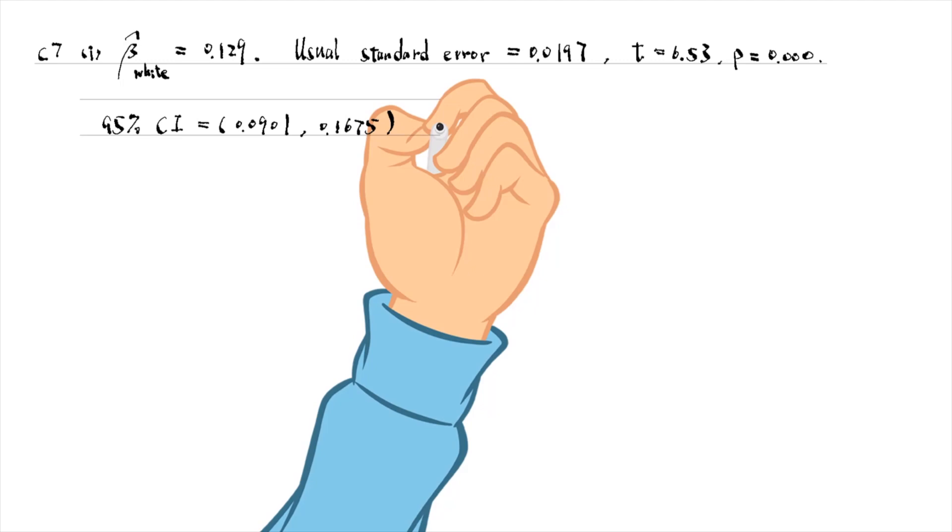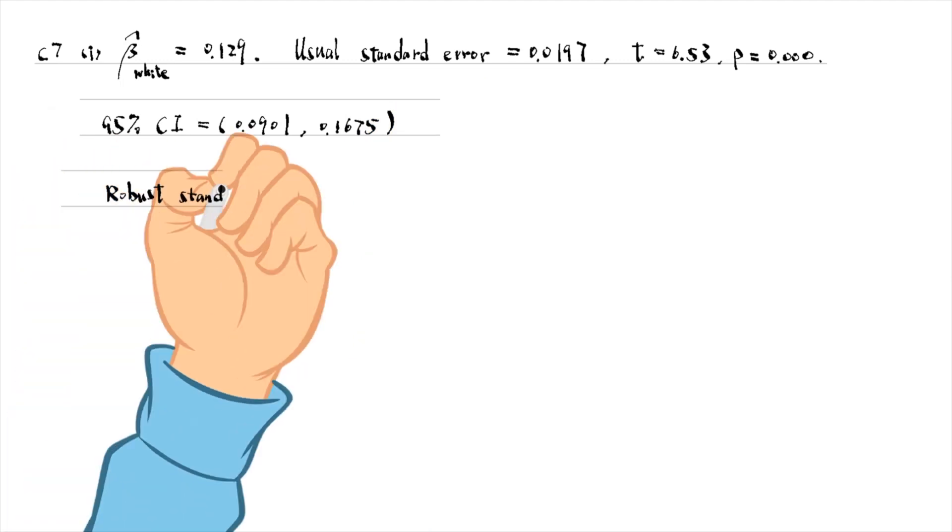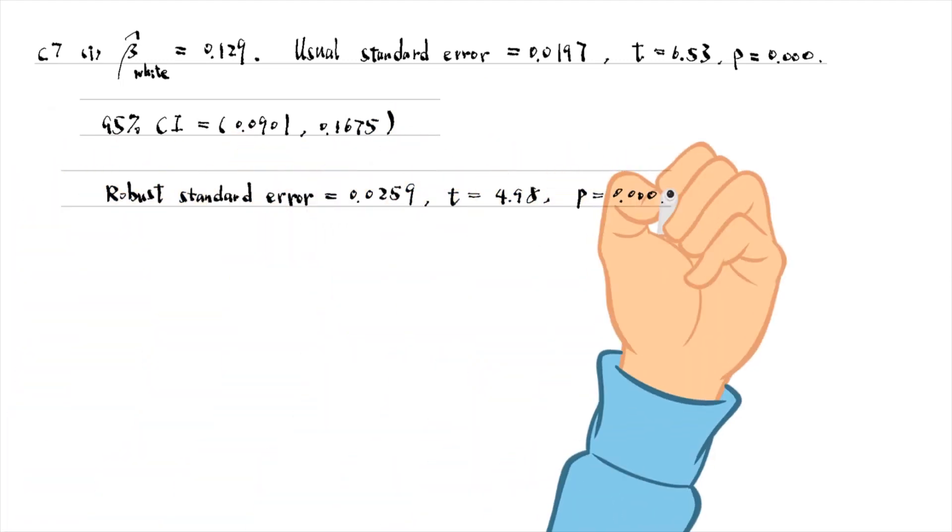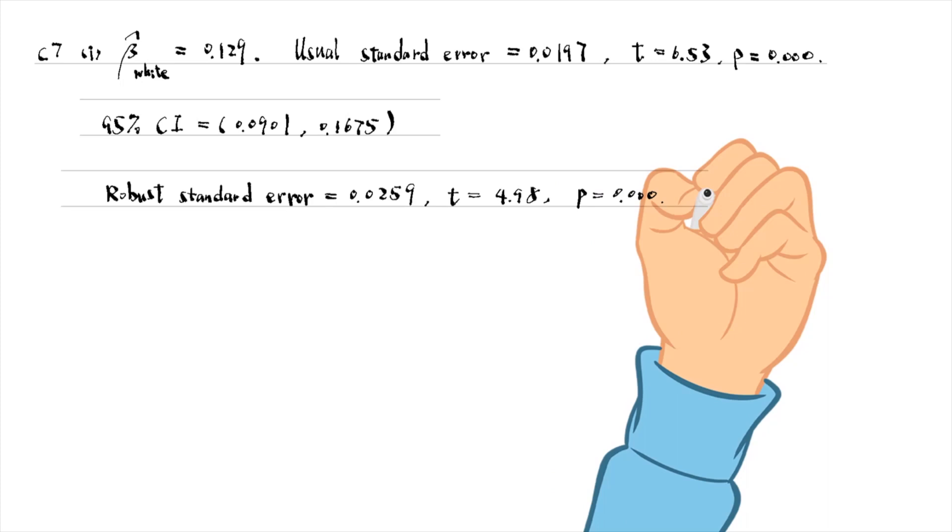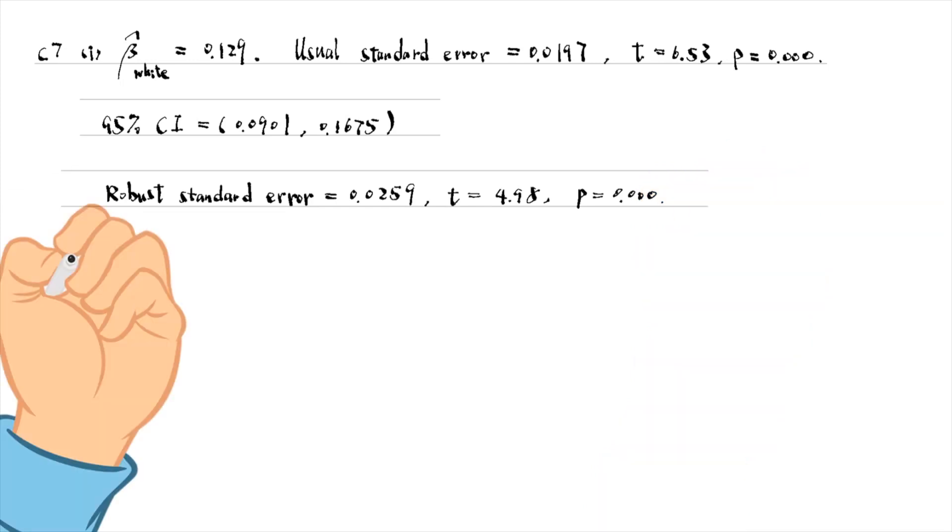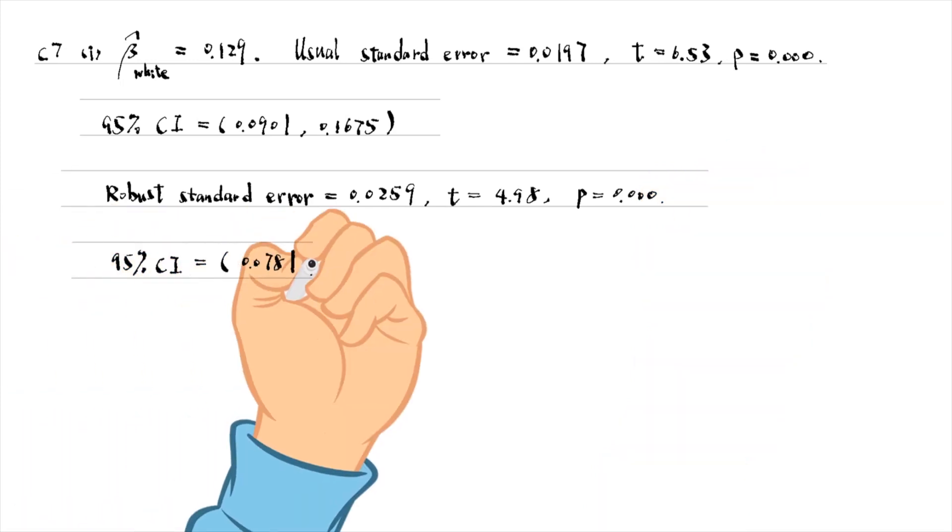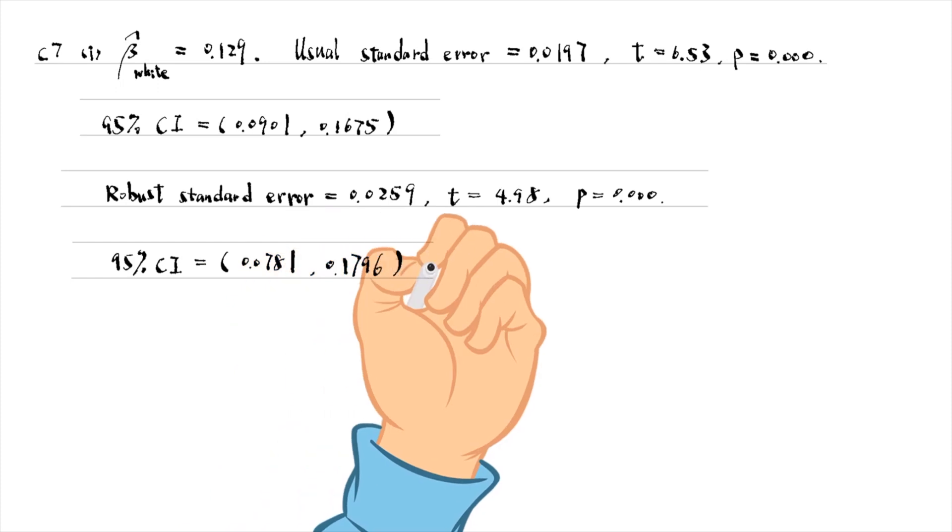The heteroscedasticity robust standard error is 0.0259, larger than the usual standard error. The t-statistic is 4.98 and its p-value is 0 to 3 decimal places. The 95% confidence interval is from 0.0781 to 0.1796. It is wider than the non-robust confidence interval. The significance of the variable is unchanged.